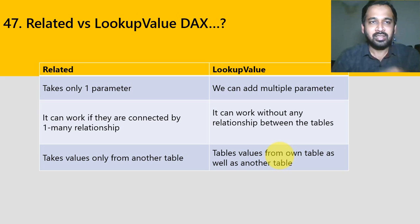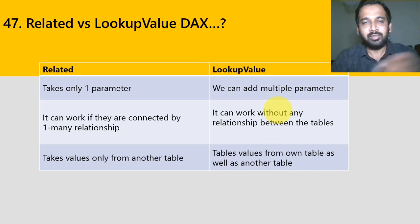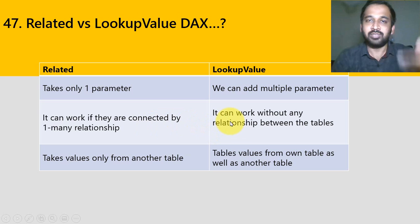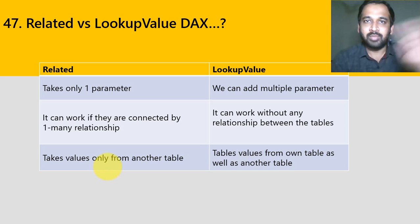The next question is: what is the difference between RELATED and LOOKUPVALUE? RELATED takes only one parameter, whereas LOOKUPVALUE allows you to add multiple parameters using the function. RELATED can work if the tables are connected by a one-to-many relationship, whereas LOOKUPVALUE can work without any relationship between the tables. Additionally, LOOKUPVALUE can take values from its own table as well as from another table.